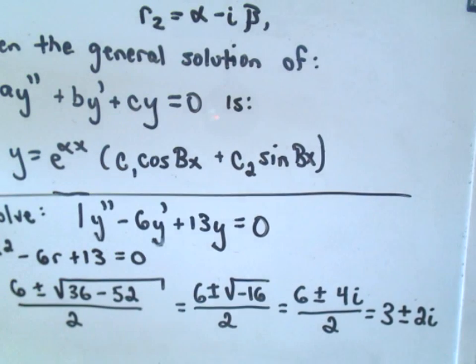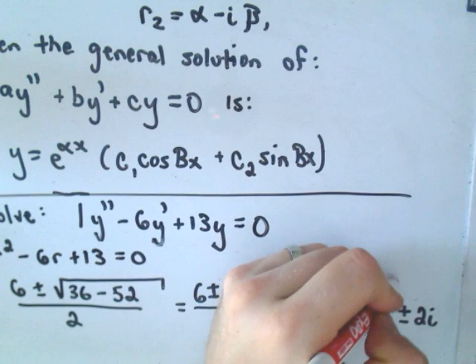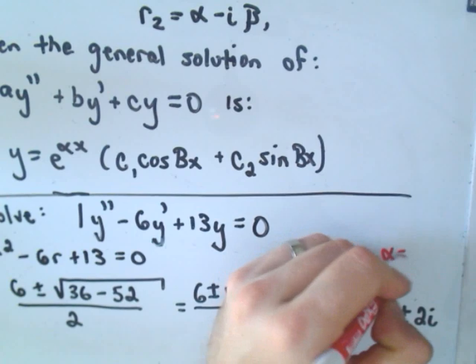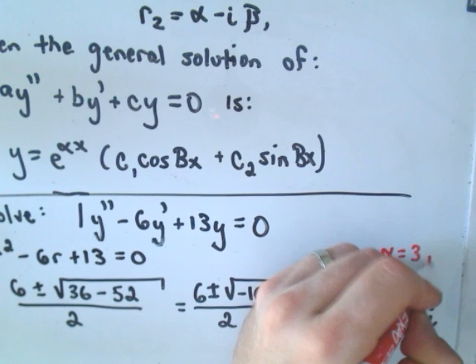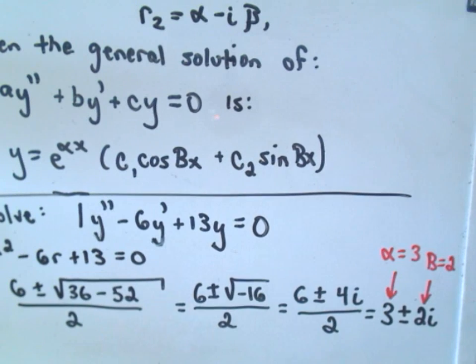We're basically there at this point. Alpha is going to be the value 3, beta is going to be the value 2. Don't worry about the plus or minus.